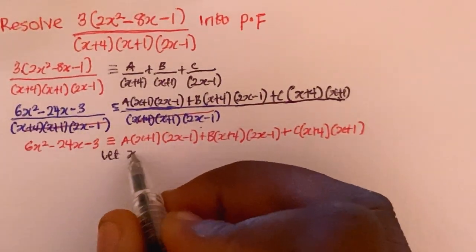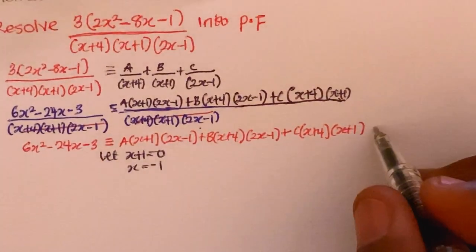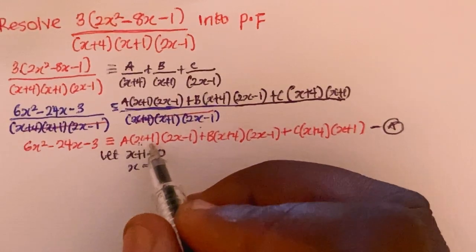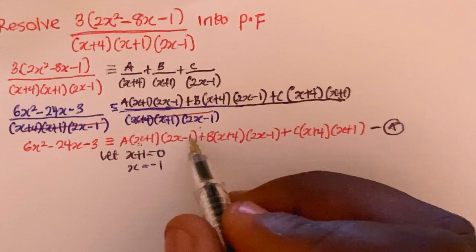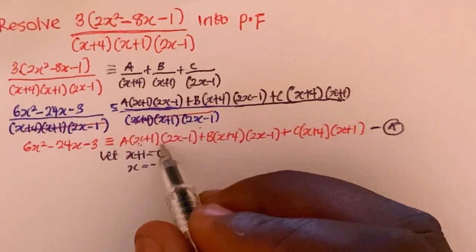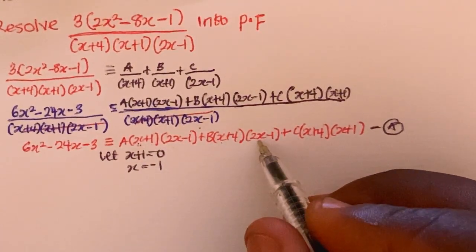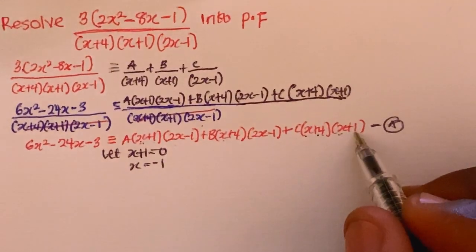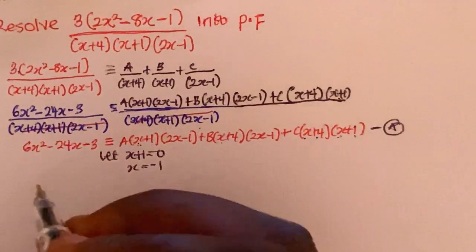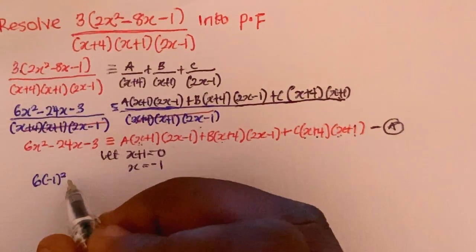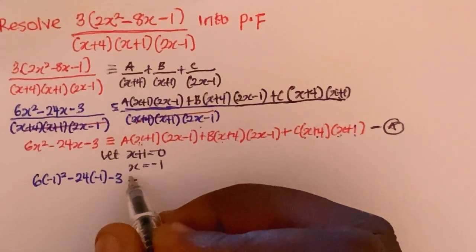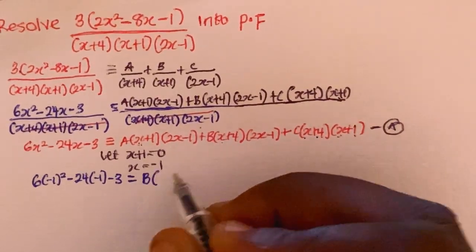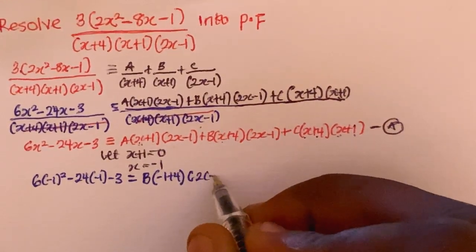Let x+1 = 0, so x = -1. Substituting x = -1: the A term has factor (x+1) = 0, so A's term vanishes. The C term has factor (x+1) = 0, so C's term vanishes. I'm left with B. So: 6(-1)² minus 24(-1) minus 3 equals B(-1+4)(2(-1)-1).